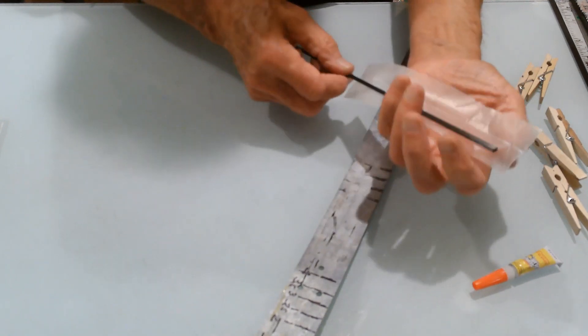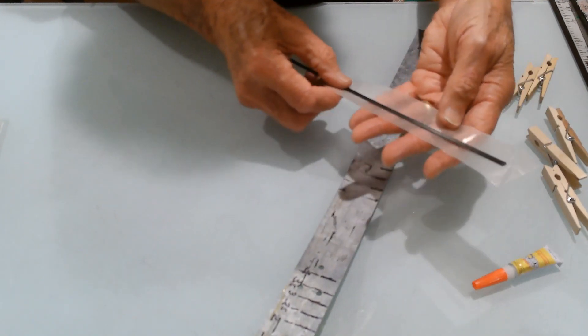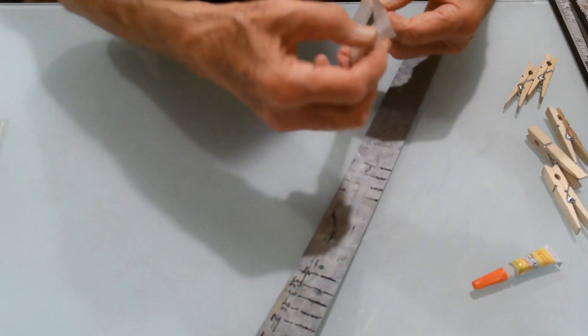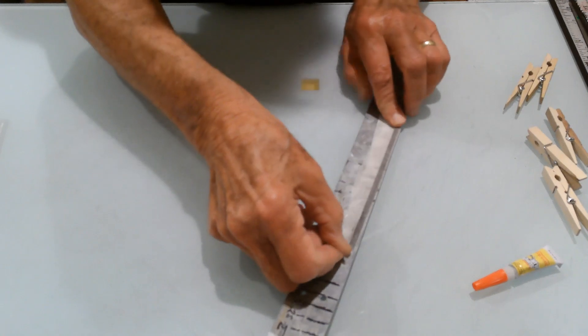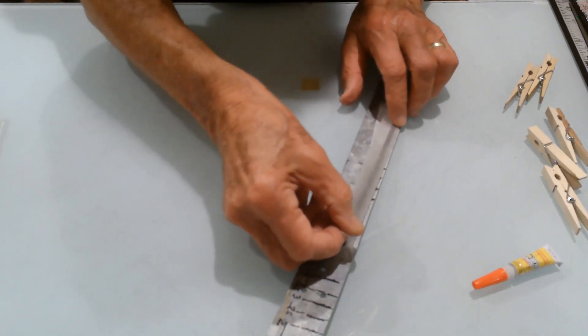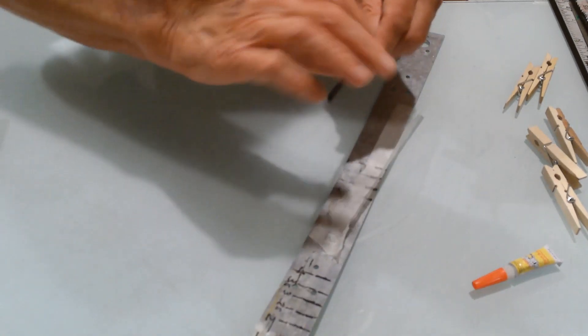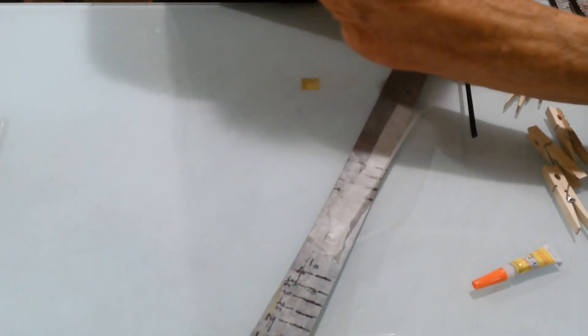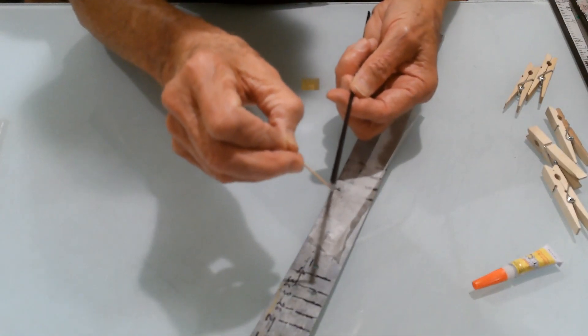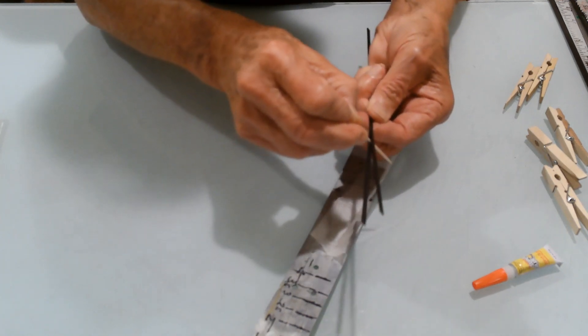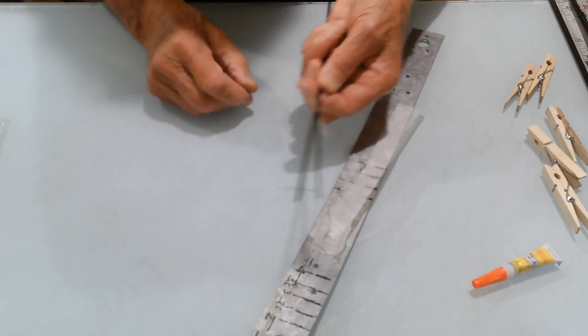And the other way I do it is simply wrap the spine where the glue is in the wax paper and then clamp it that way.